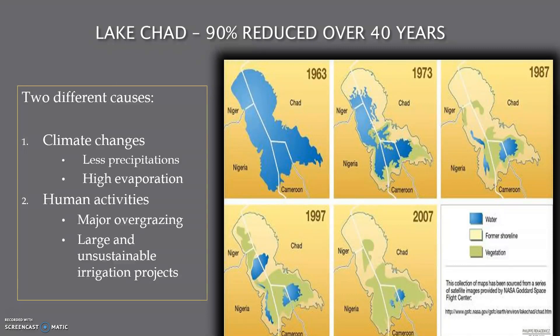The lake itself originally extended over four countries: Chad, Nigeria, and Cameroon. The lake is located in northern Africa and was considered the sixth largest lake in the world back in 1963.